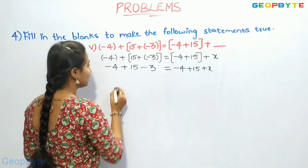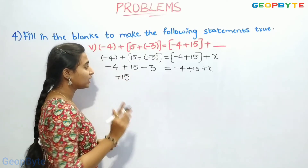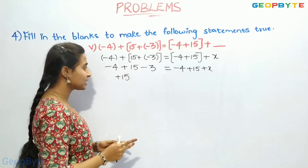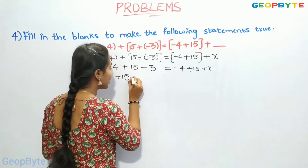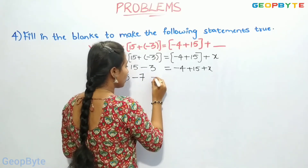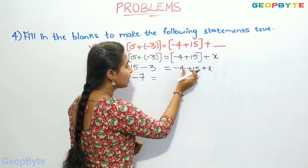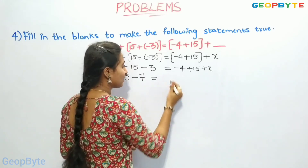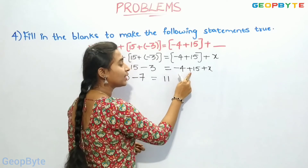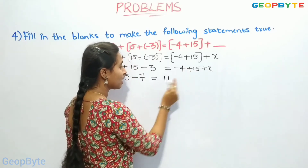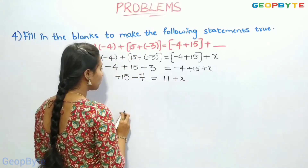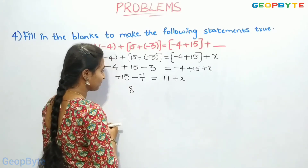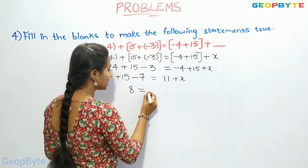On the left-hand side, we solve minus 4 and minus 3 — minus into minus gives plus, so 4 plus 3 is 7, but the sign remains minus, giving minus 7. Now on the right-hand side: minus 4 plus 15 — plus into minus gives minus, 15 minus 4 is 11, giving plus 11 for the greater number. So we have 15 minus 7 is 8 on the left. On the right-hand side we have 11 plus x.